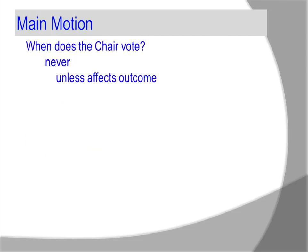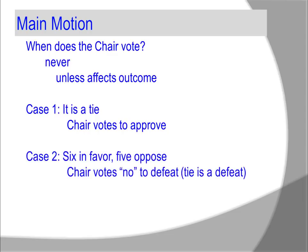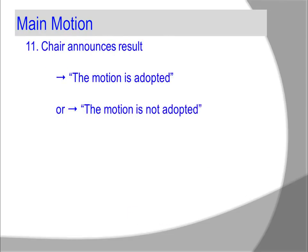When does the chair vote? Never, unless it affects the outcome. Case 1: it is a tie — the chair votes to approve. Case 2: 6 in favor, 5 opposed — the chair votes no to defeat. A tie is a defeat. There is an exception: if it is by ballot, the chair votes. The chair announces the results: 'The motion passes,' or 'The motion fails.'